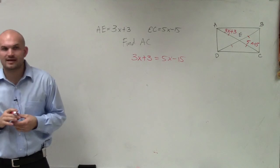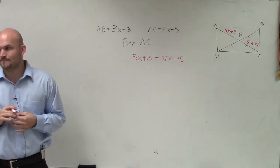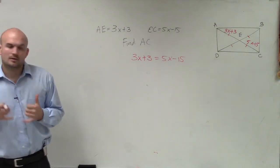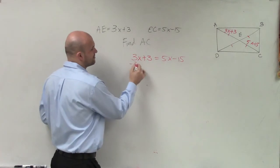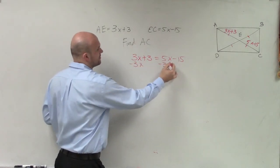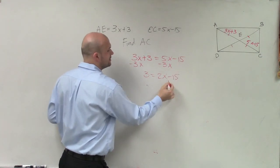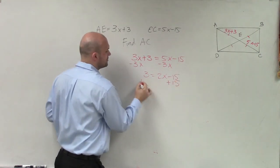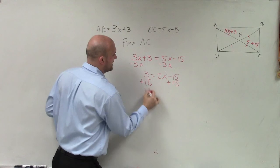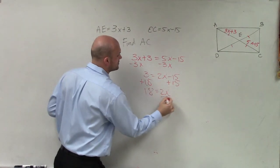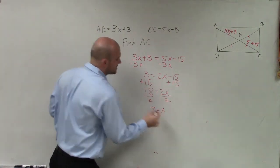Does anybody have any questions on that equation or where I came up with that? Now I just need to solve. So again, I get my variables on the same side. So I have 3 equals 2x minus 15. Now I isolate my variable. So I get 18 equals 2x. Divide by 2, divide by 2, 9 equals x.